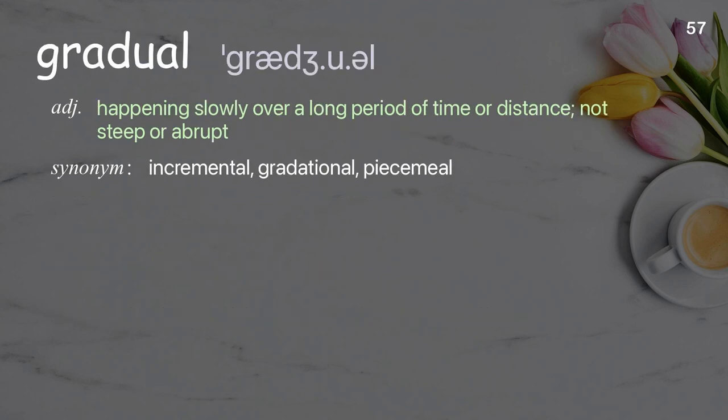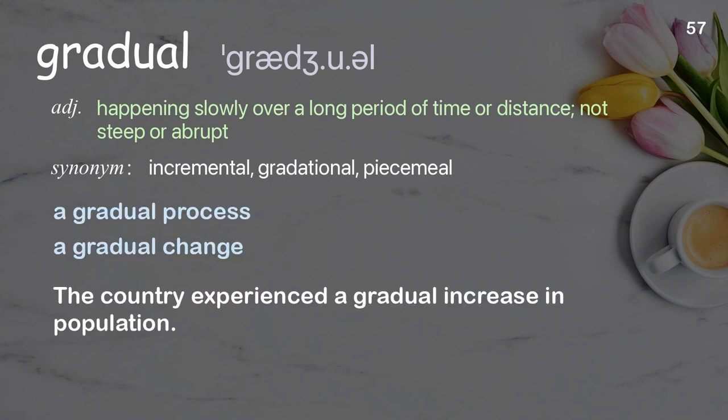Gradual: happening slowly over a long period of time or distance; not steep or abrupt. Examples: a gradual process; a gradual change. The country experienced a gradual increase in population.